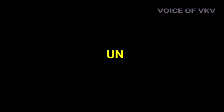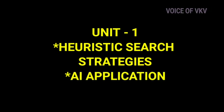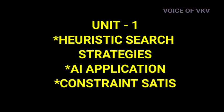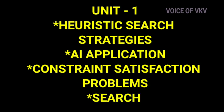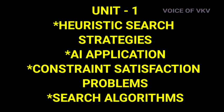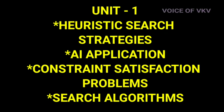In Unit 1, there are 4 important topics. The 1st is Heuristic Search Strategies. The 2nd is Artificial Intelligence Applications. The 3rd is Constraint Satisfaction Problems. There is also an extra topic: Uninformed Search Strategies. You can see all 4 topics in detail in the playlist.